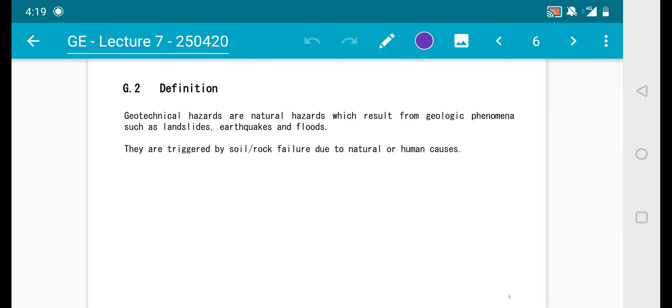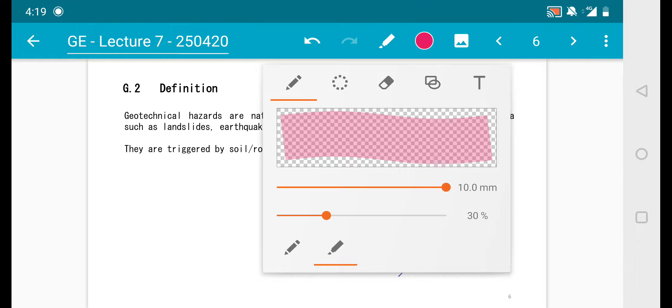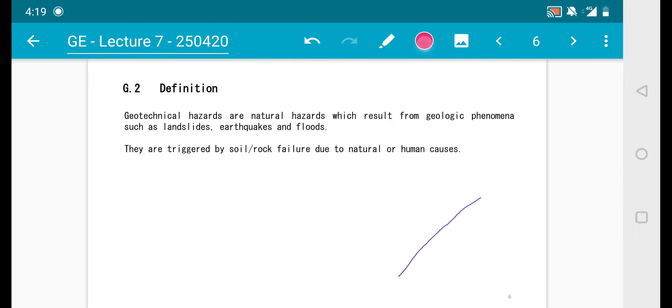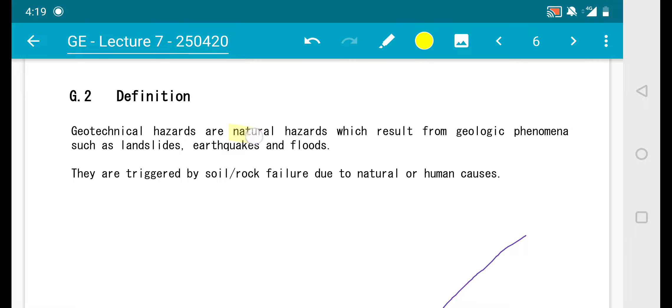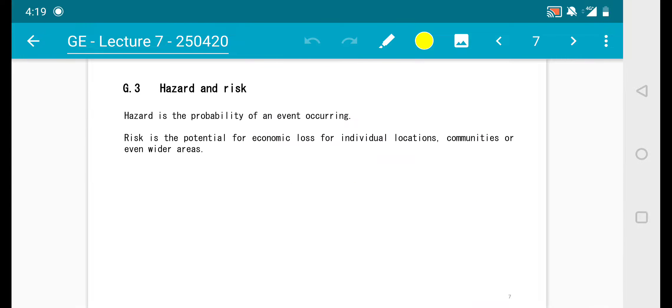Definition. What is geotechnical hazard? It's basically natural hazards which result from geologic phenomena such as landslides, earthquakes, and floods. They are triggered by soil and rock failure due to natural or human causes.